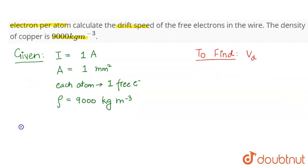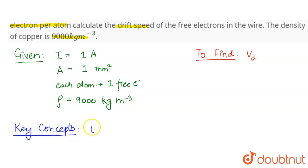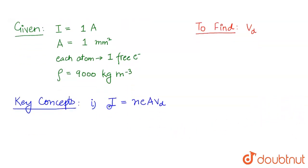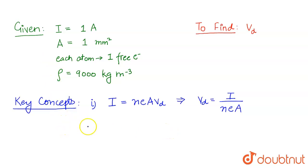Before we solve this question, let us discuss some key concepts. The first key concept is the relation between current and drift velocity, given as I = neavd, where I is the current flowing through the wire, n is the number of free electrons per unit volume, e is the charge of the electron, a is the cross-sectional area of the wire, and vd is the drift speed. From here we can find vd as I upon nea.